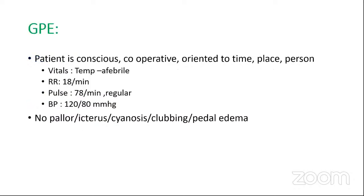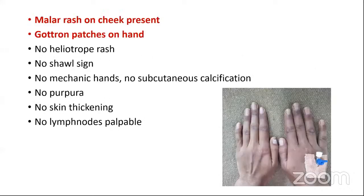General physical examination: patient is conscious, cooperative, and oriented to time, place, and person. Vitals: temperature afebrile, respiratory rate 18 per minute, pulse 98 per minute regular, blood pressure 120/80 mmHg in right arm supine. No pallor, icterus, cyanosis, clubbing, or pedal edema. Malar rash on cheeks present. Gottron's papules on hands. No heliotrope rash, no shawl sign, no mechanic's hands, no subcutaneous calcification, no purpura, no skin thickening, no lymph nodes palpable. Mechanic's hands are found in antisynthetase syndrome. V sign and shawl sign should also be mentioned.